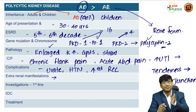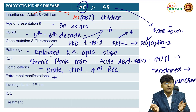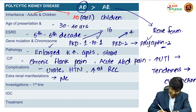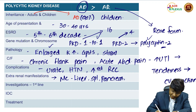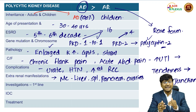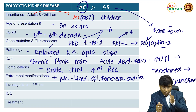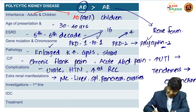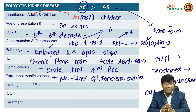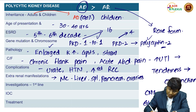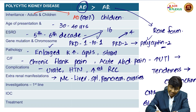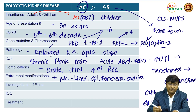Extrarenal manifestations: cysts are found in the liver, spleen, pancreas, and ovaries. In the CNS, berry aneurysms develop and when they rupture, patients are at risk of subarachnoid hemorrhage. In the GI tract, patients are at risk of colonic diverticulosis — diagnosed by barium enema showing a saw-toothed appearance. Cardiovascular manifestations include mitral valve prolapse syndrome.